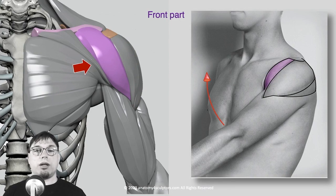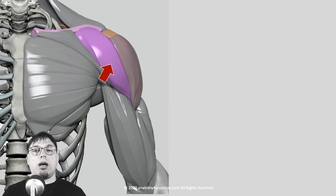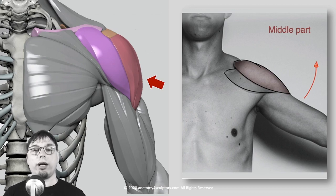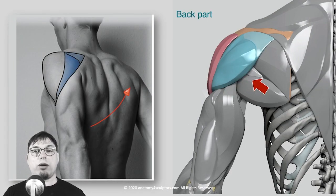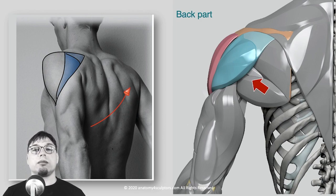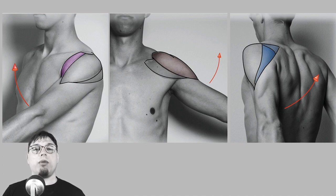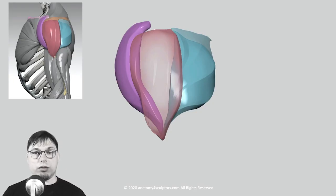The front part is responsible for flexion — lifting your arm in front of you. The middle part is responsible for abduction — moving the upper limb away from the body, like lifting a wing. The posterior part is responsible for extension of the upper limb. So one muscle can produce three different movements: forward, sideways, and backward.